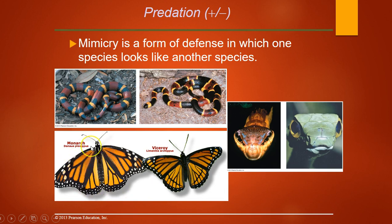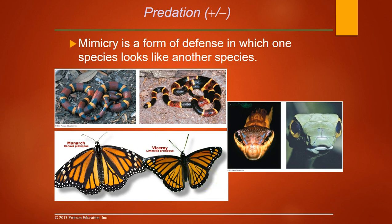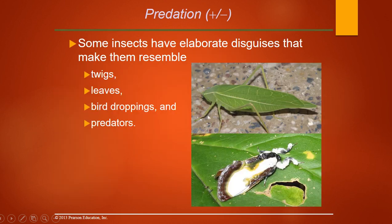The monarch butterfly eats milkweed, making it toxic — if a bird eats one and gets sick, it won't eat another. The viceroy butterfly was thought to be a non-poisonous mimic, but we now know it's also toxic, so they both benefit from looking alike. There's also a caterpillar that looks like a snake. Katydids often look like leaves, and some moths look like bird droppings — a pretty effective defense.